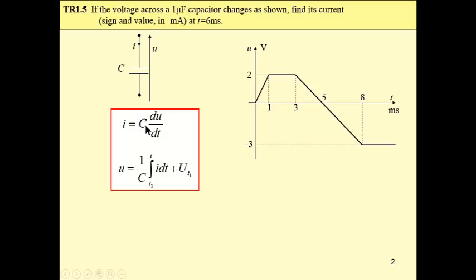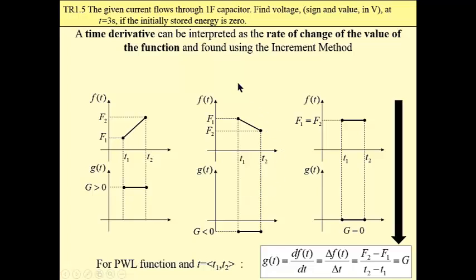Now, general considerations: on top we have function F(t) and bottom is G(t), and G(t) is the differential of F(t). So the time derivative can be interpreted as the rate of change of the value of the function and found using the increment method. So this is the increment method. The differentiated function F is a ratio of two increments: increment of function values F2 minus F1 divided by the increment of time, and this is constant for piecewise linear functions.